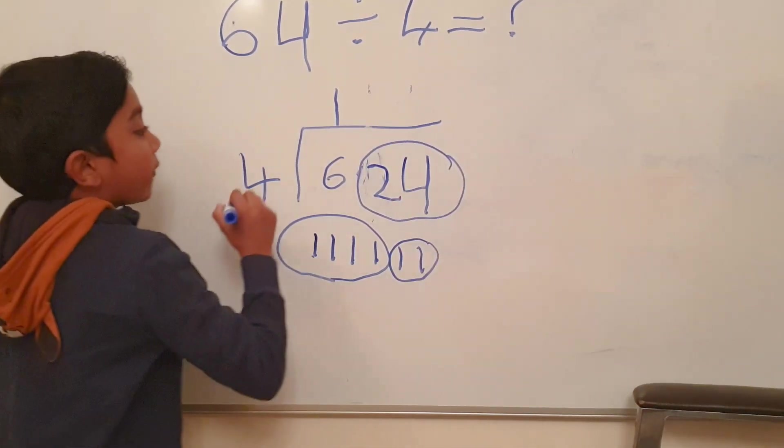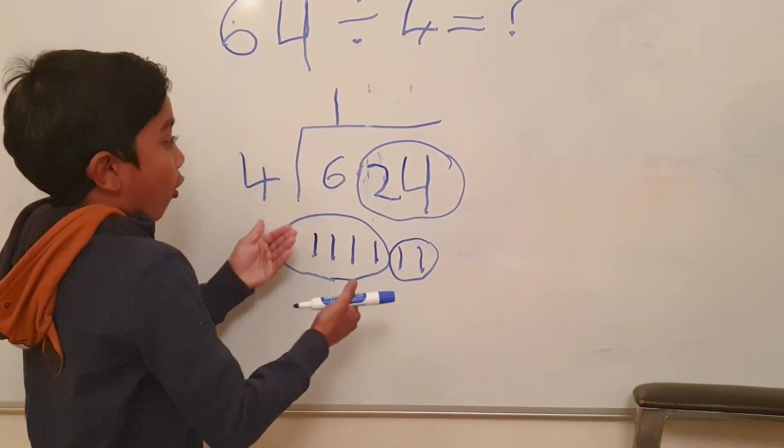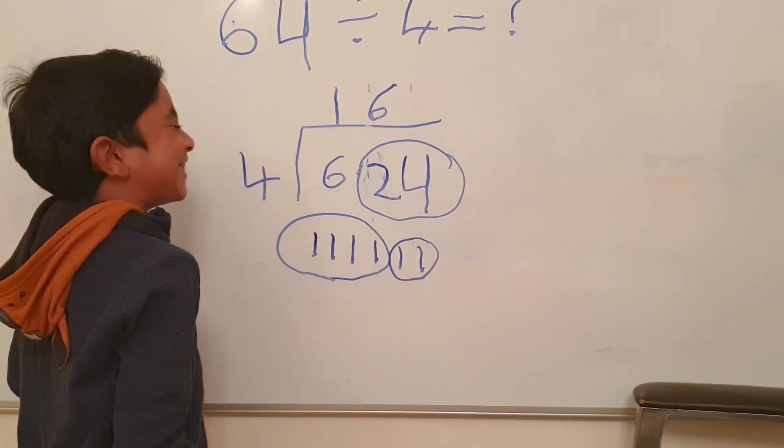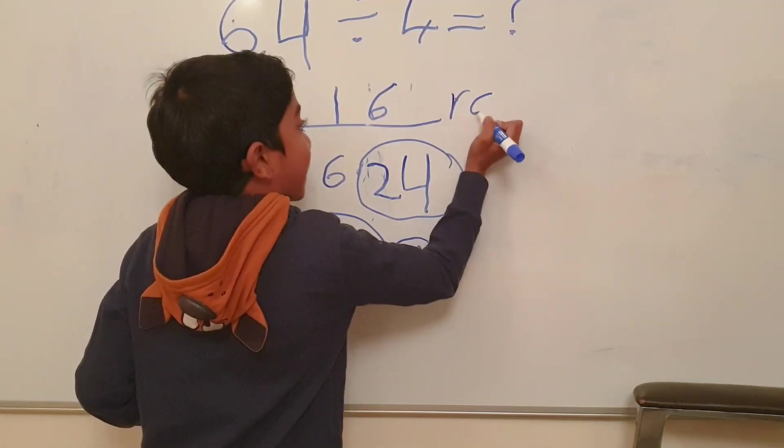How many 4's in 24? 4, 8, 12, 16, 20, 24. Six. And we landed exactly on 24. So there's zero people remaining.